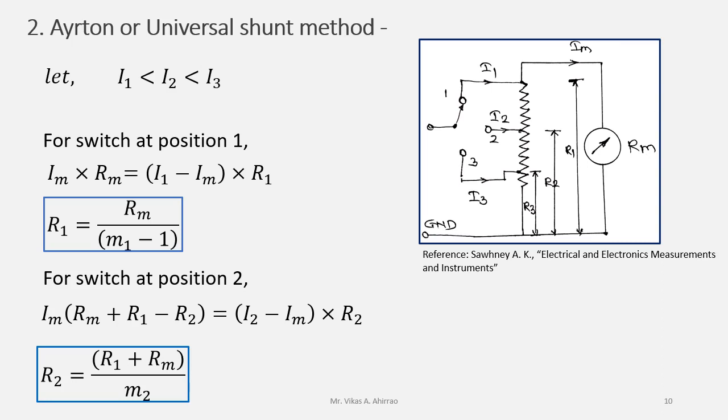Remember, here m1, m2, and m3 are the ratio of current to be measured, that is i1 or i2 or i3, upon the full scale meter current ifs.